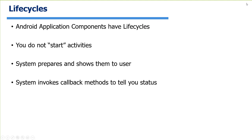Each activity has a lifecycle associated with it, and this is pretty common across all application components in Android. You don't actually create an instance of it and say go — it's not like a main inside an application. You declare which activities you have, and then Android creates the activity for you and calls several callback functions. You'll define callbacks for things like creating your user interface, pausing to switch to a different activity, or when the user goes back to the home screen. The Android system is the one driving.